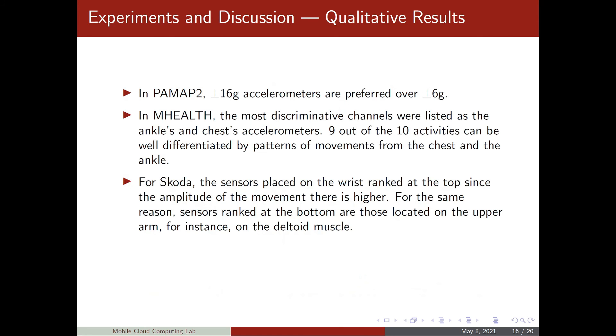Talking about the ranking of the sensor channels, we see that, for example, in the PAMAP2 dataset, the accelerometers that are able to spot, to react, to a higher amplitude of accelerations are those preferred. This is understandable because in motions such as running, these sensors are not easily saturated, so they can convey more information. In the mHealth dataset, the most discriminative channels were listed as the ankles and chest accelerometers. Well, in fact, 9 out of 10 activities can be well differentiated by the patterns of movements from the chest and the ankle for this mHealth dataset.